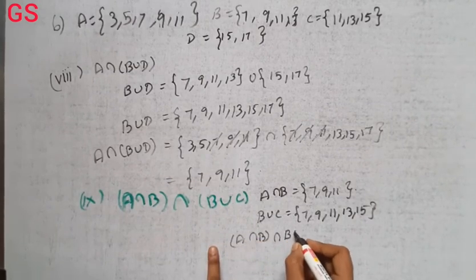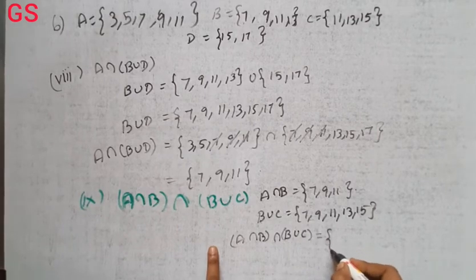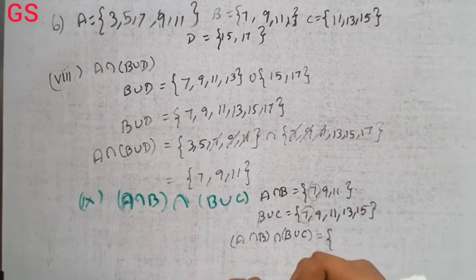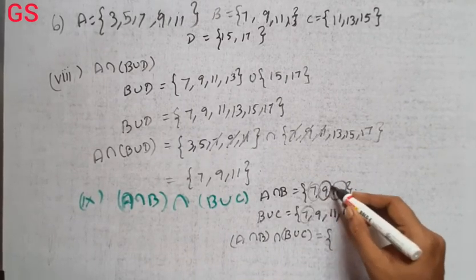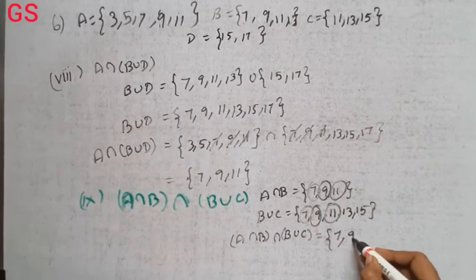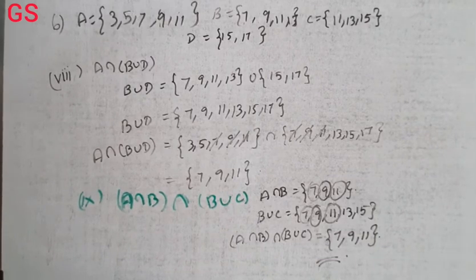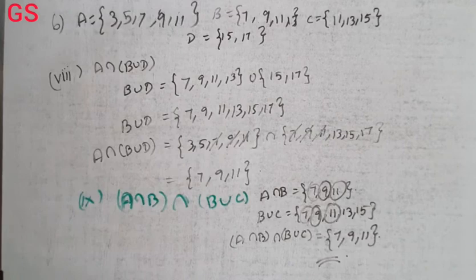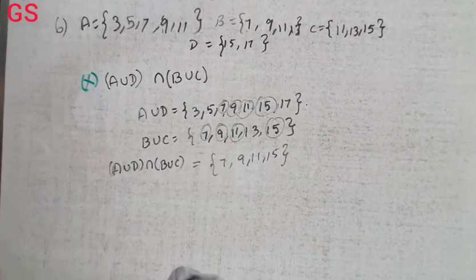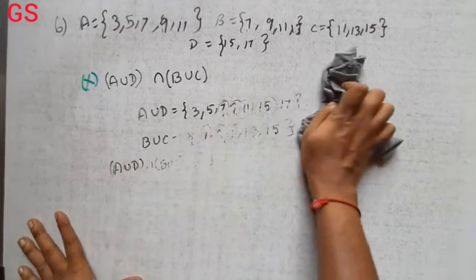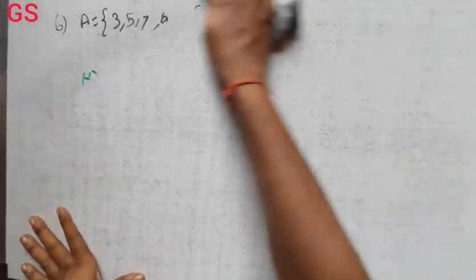A intersection B intersection B union C. Intersection means common. 7, 9, 11 is common. So, 7, 9, 11. This is A intersection B intersection B union C.